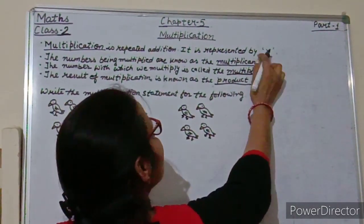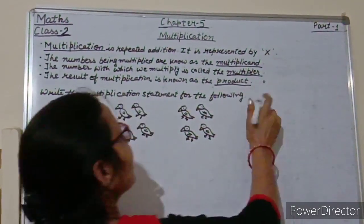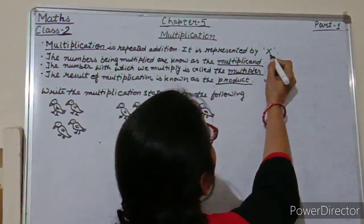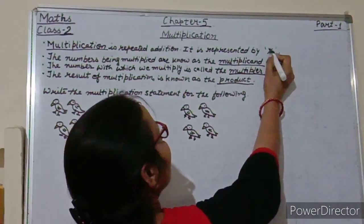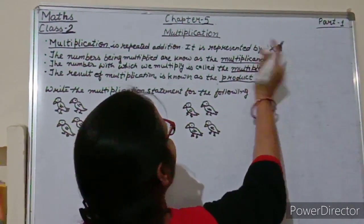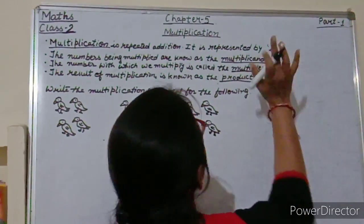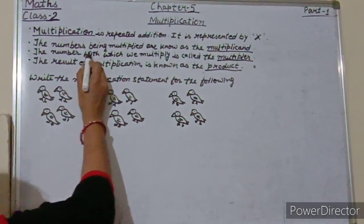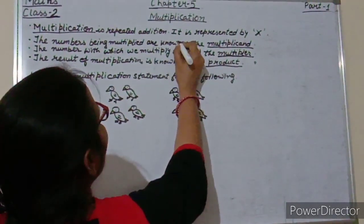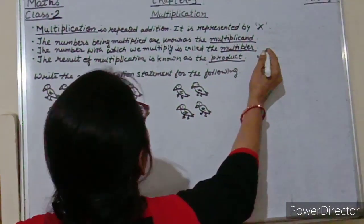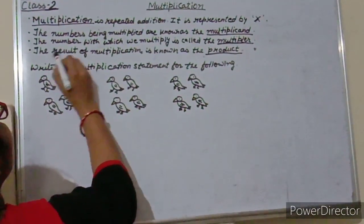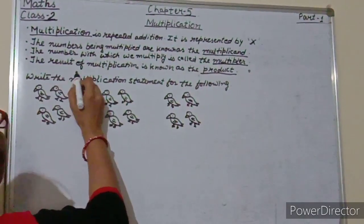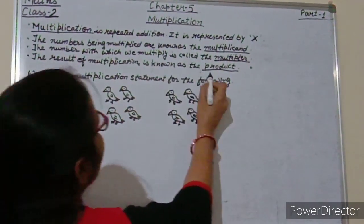And this sign — you know, students, what is the sign? This is an X sign — capital X — when we write the English alphabet X, we write like this. The numbers being multiplied are known as the multiplicand, the number with which we multiply is called the multiplier, and the result of multiplication is known as the product.